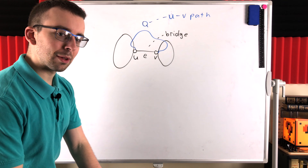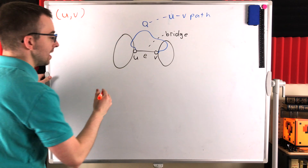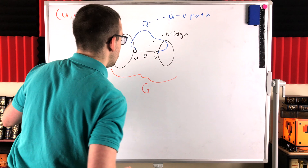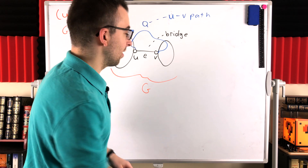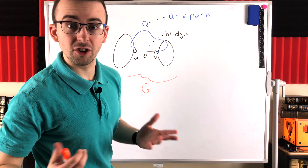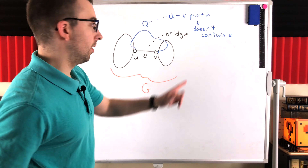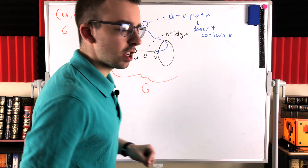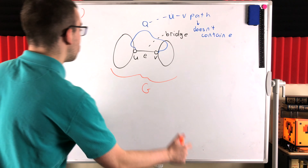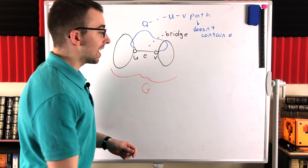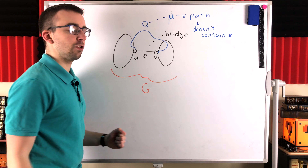That's going to be useful. If we consider the graph G minus E, path Q will still exist since it doesn't contain the bridge edge E. So Q exists in G minus E. Now to get our contradiction, we want to show that G minus E is connected, which contradicts E being a bridge.